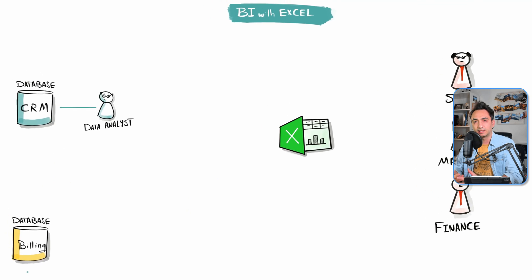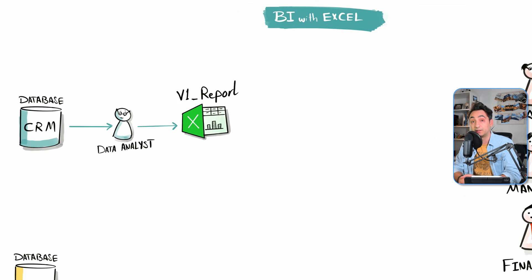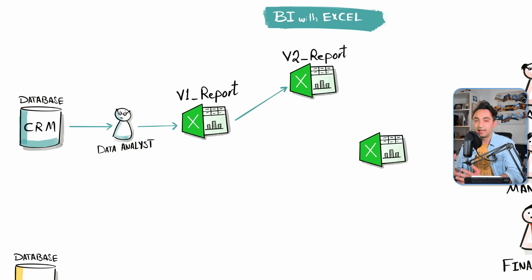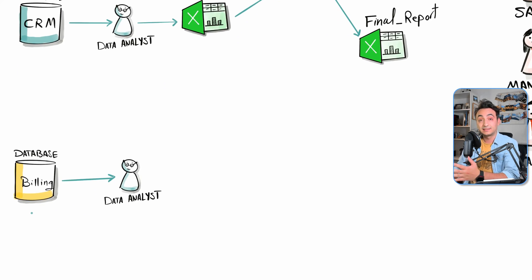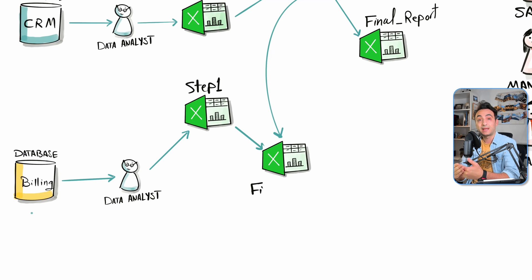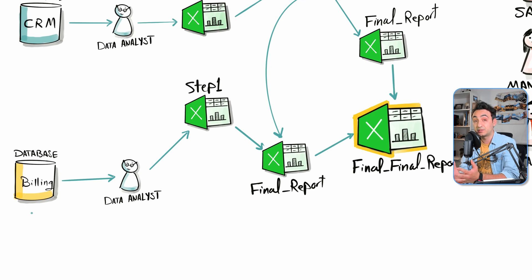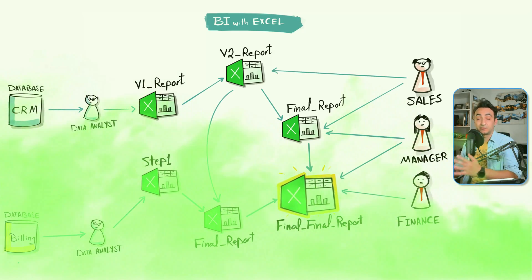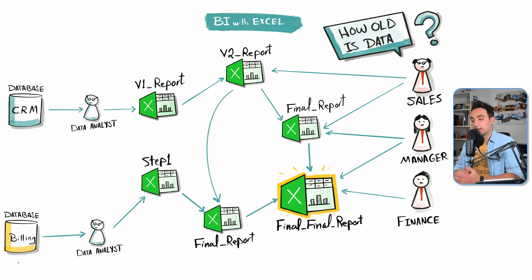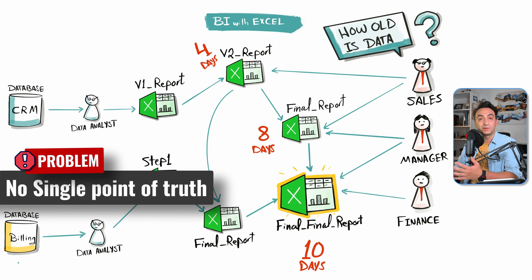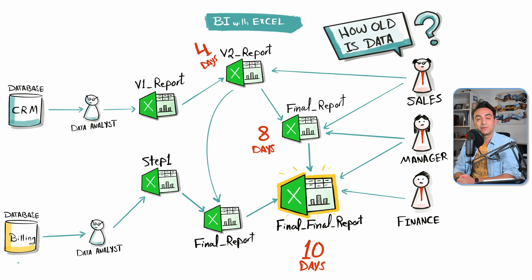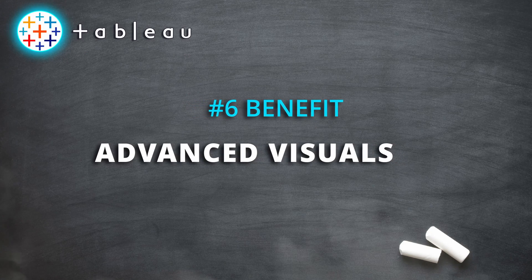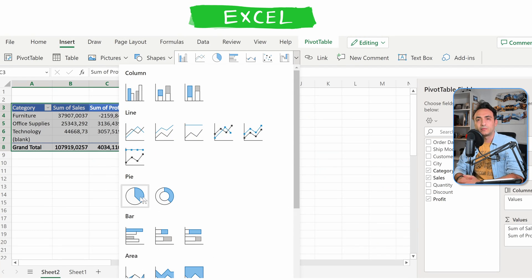Another benefit is reducing chaos. With Excel, a data analyst exports data, makes version one of a report, then version two for other requirements, and eventually a final report. With multiple data analysts working on different source systems, we end up with six different versions of the report. The end user has to access different versions, and if we ask how old the data is, we get different answers — ten days ago, eight, four, three days. That means we don't have a single point of truth. Modern BI tools help eliminate this chaos and build a single point of truth for our data.